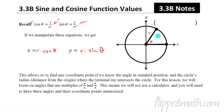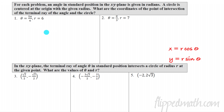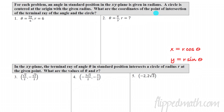We're going to focus on angles that are multiples of pi over six and pi over four — that's 30 and 45 degrees. We're not going to use a calculator because you need to memorize those values. Each problem gives us an angle in standard position in the xy-plane and a circle centered at the origin with a given radius. We want the coordinates of the point of intersection of the terminal ray and the circle.